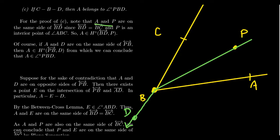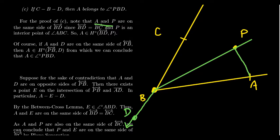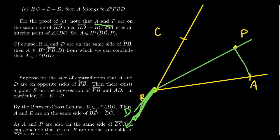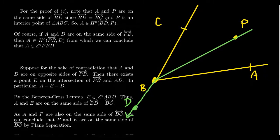To show that A is interior to angle PBD, we need to show it lies in two half-planes. First, look at A and P with respect to line BD: since BD is the same line as BC, and P is interior to angle ABC, A and P are on the same side of line BC, hence the same side of line BD. So A belongs to the open half-plane determined by line BD and point P. That's the first half.